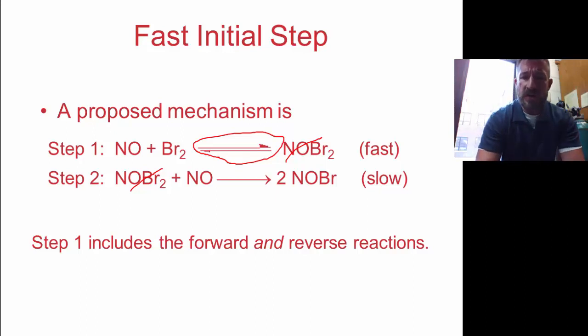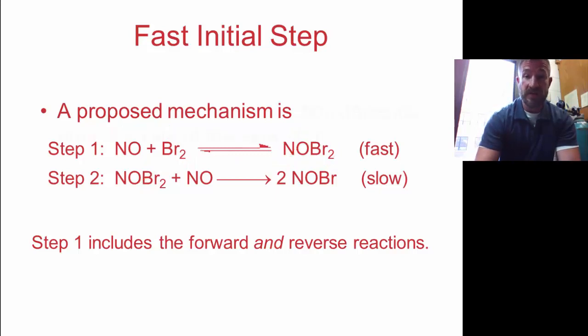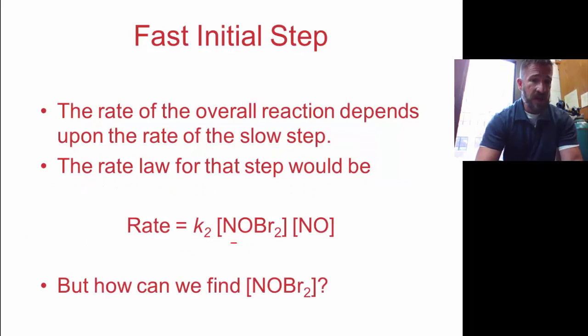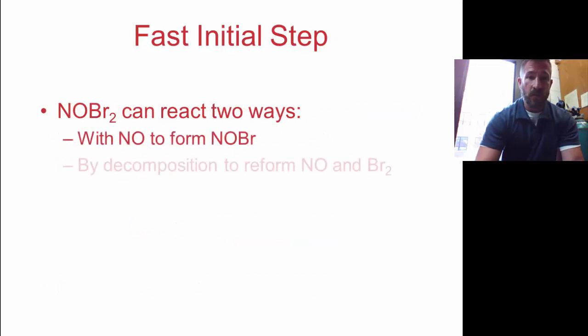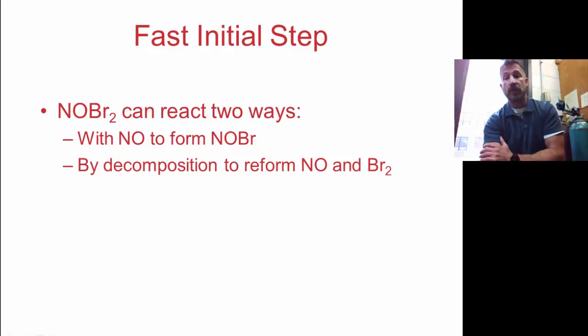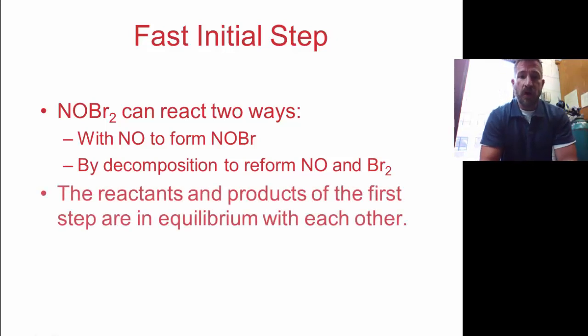So what we're basically going to do is we're going to write a rate law for this forward reaction, write a rate law for this reverse reaction, and then algebraically manipulate it so that we find what is equal to NOBr₂ and substitute these substances in for NOBr₂. NOBr₂ can form two ways. It can form with NO reacting with Br₂ to form NOBr₂, or by decomposition to reform the reactants. So the reactants and products for the first step are in equilibrium with each other. Therefore, we can say the rate of the forward is equal to the rate of the reverse.